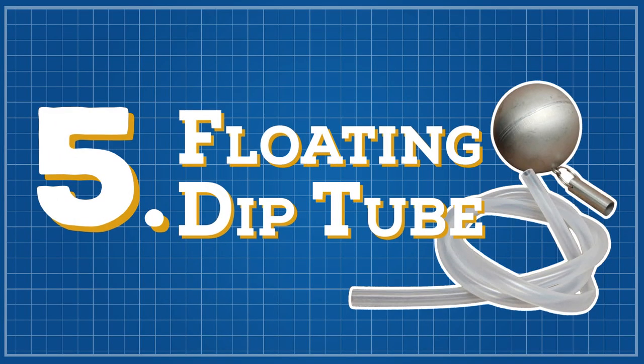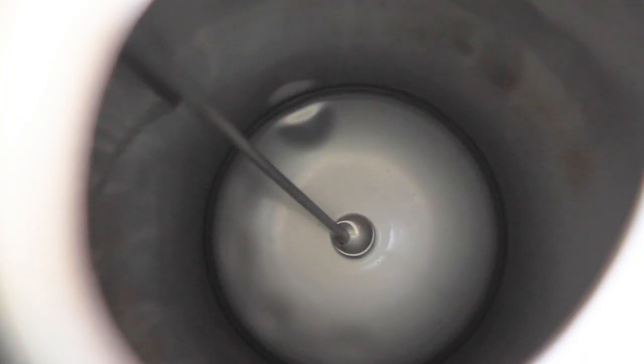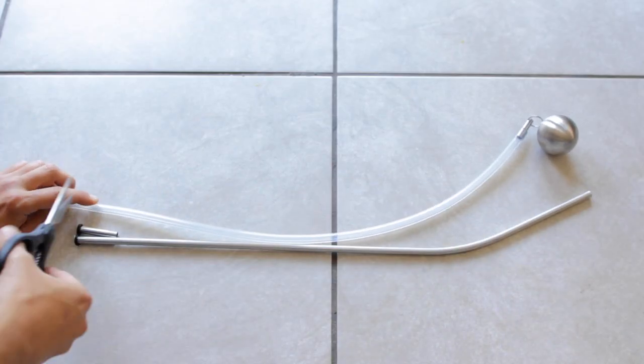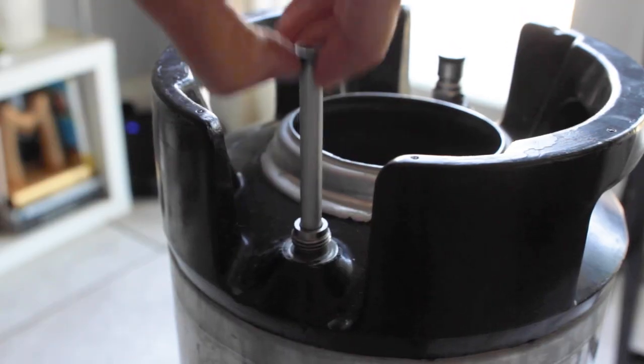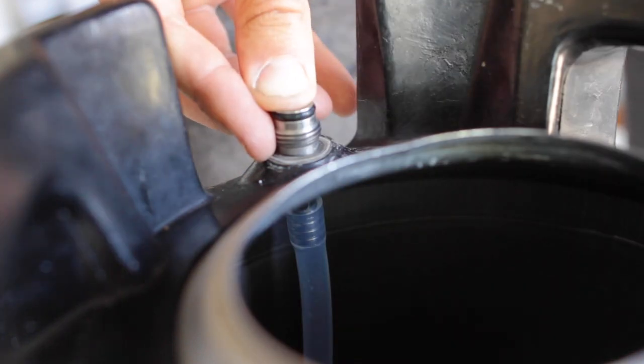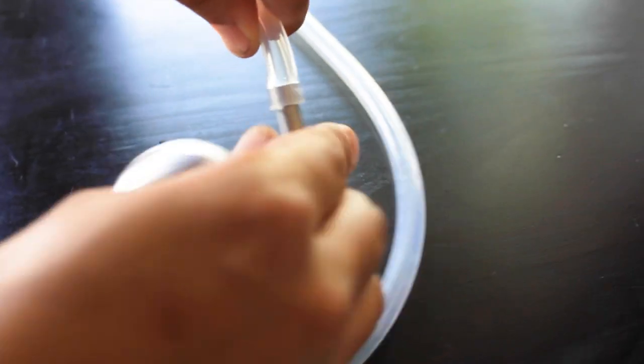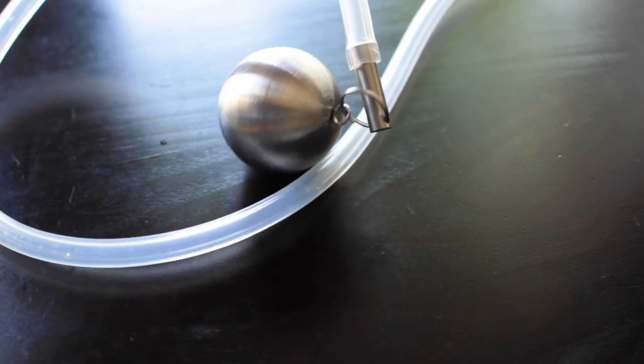Number five, floating dip tube. I recently got this one and I've been loving the results. Instead of having a stiff tube in your keg that pulls from the bottom where a lot of the sediment and yeast fall out to, you can use a floating dip tube to pull from the top of your keg, which means you get clearer beer faster. Essentially, you take out the original dip tube and replace it with a line of flexible tubing that has a floating ball on one end. The ball floats to the top of the beer and as you drink, it just stays at the top, pulling that clear beer.